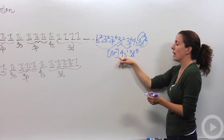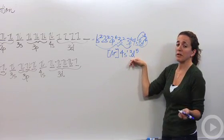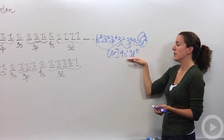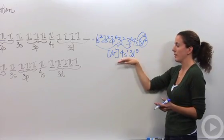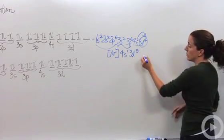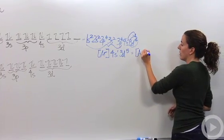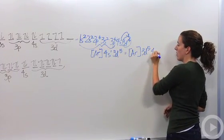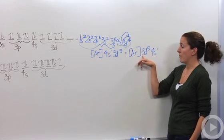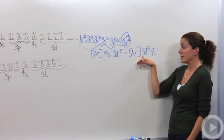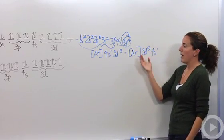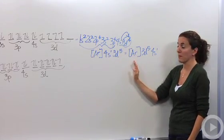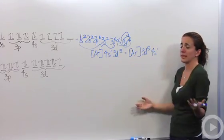This is the electron configuration you're going to see, and this is actually higher in energy. You might also see it written in order of numbers, where 3 comes before 4, but they're exactly the same thing — depicting the exact same configuration. Nothing's different between them, so you might see either one.